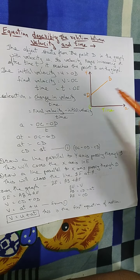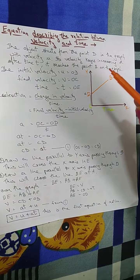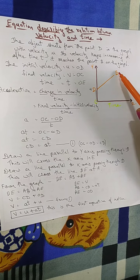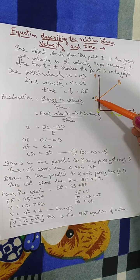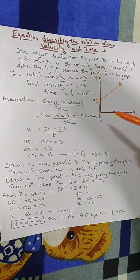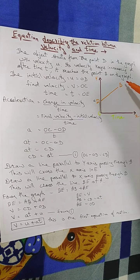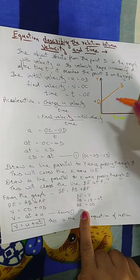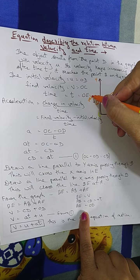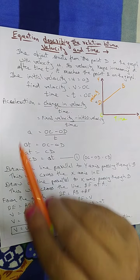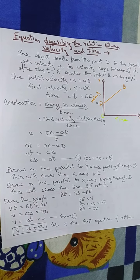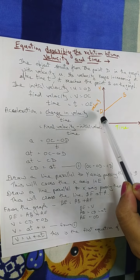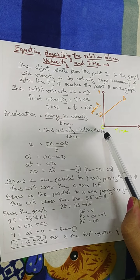The object reaches point B on the graph. An object starts from point D and reaches point B. If it starts from D, then this much is the initial velocity — it increases its velocity over time. On the x-axis we have taken time and on the y-axis we have taken velocity. The initial velocity is U, which is the segment OD. The starting point is D, so OD is the initial velocity.